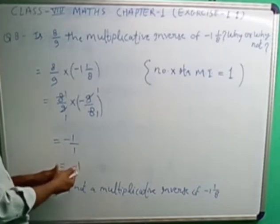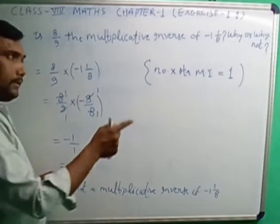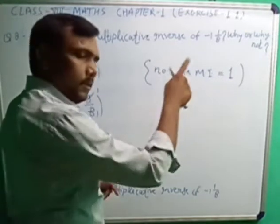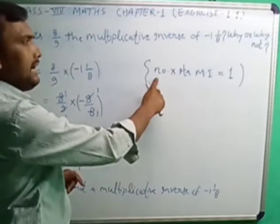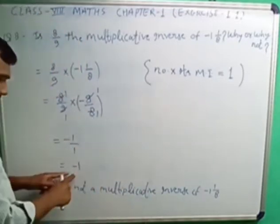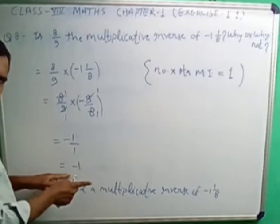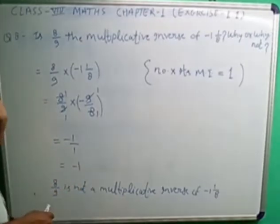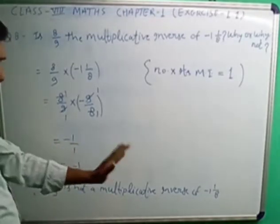This minus sign is here. 1 by 1 means simple one, so minus 1. Minus 1 will come. If positive 1 will come means our identity is proved, but here what is? Minus 1. It means 8 by 9 is not a multiplicative inverse of minus 1 1 by 8.